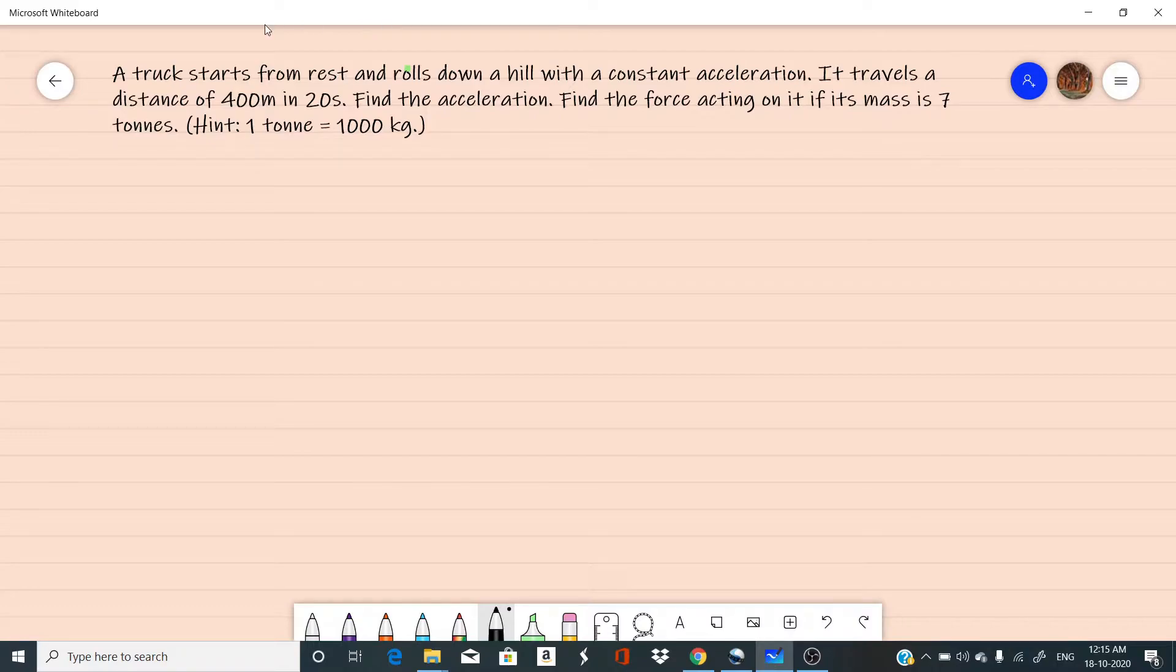In this question, a truck starts from rest and rolls down a hill. This is a hill and the truck starts from rest. So the initial velocity will be 0. A truck starts from rest means initial velocity equal to 0 and rolls down a hill. This is the truck with a constant acceleration.